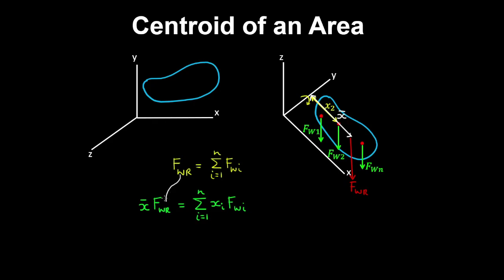Now if we substitute for the resultant force using this expression, we obtain the following expression, where we have x-bar by the resultant force, defined by this sum, is equal to the total moment produced, which is defined by the sum of moments on the right hand side. And now if we divide through by this term, we obtain an expression for the centroid for a discrete body.